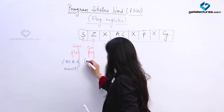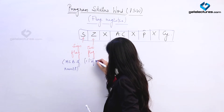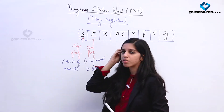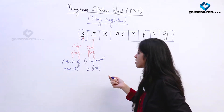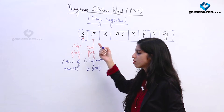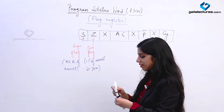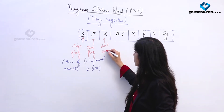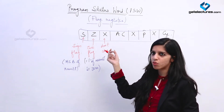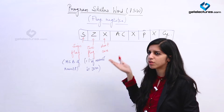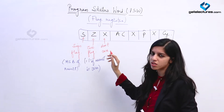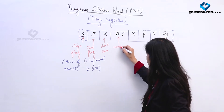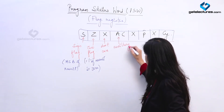The zero flag is 1 if the result is zero. So if you are performing some addition or subtraction such that the result is zero, the zero flag is going to show 1. The don't care bits we generally consider as 0, but don't care means you can consider 0 or 1 — it does not matter. Next is the Auxiliary Carry flag.